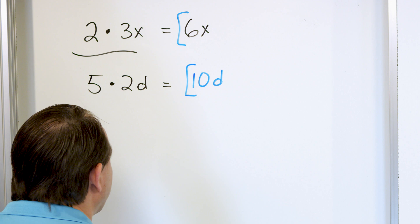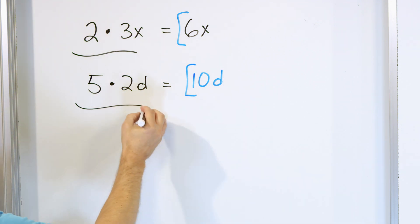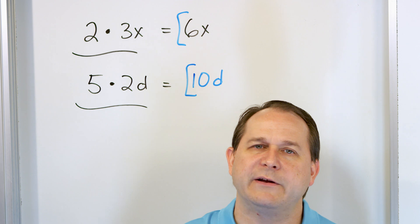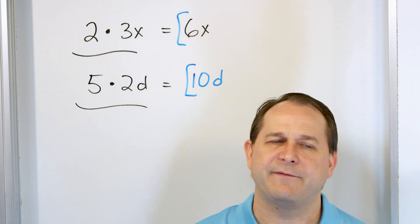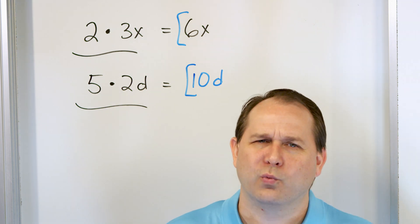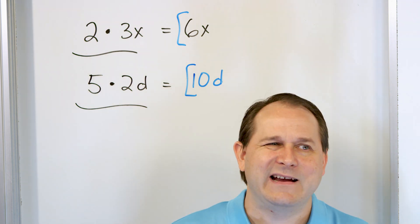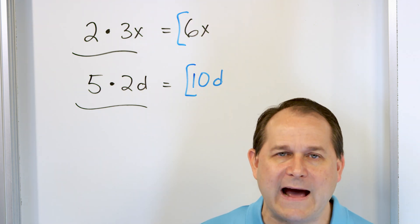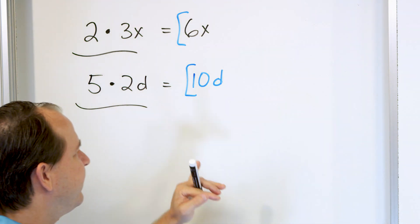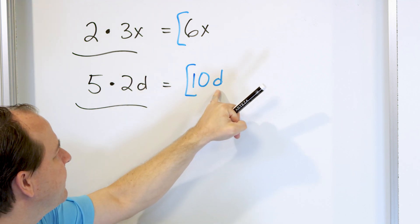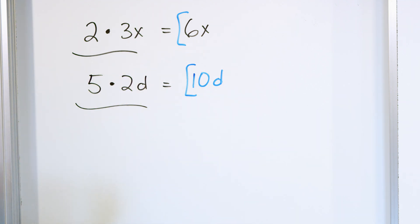Notice there isn't really much work to show here. But it's like with your multiplication tables — if I ask you what is 2 times 2, you know the answer is 4, you don't really show your work for that. The only difference here is there's just a letter involved, and you have to know that the letter comes into the answer. We'll get it through repetition.